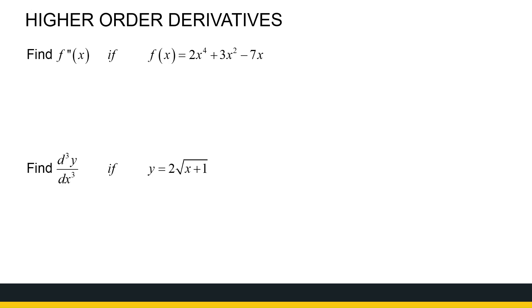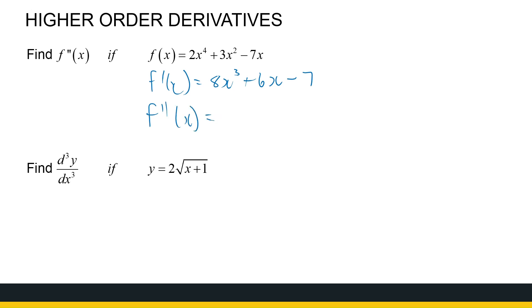Let's start straightforward. We've got a polynomial and we want the second derivative. You first find the first derivative, which gives you 8x cubed plus 6x minus 7 using our differentiation rules. Once we have the first derivative, we want the second derivative — that's the derivative of the derivative. So 8 times 3 is 24x squared plus 6. That is the second derivative.